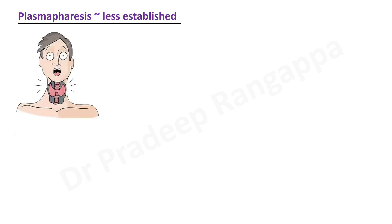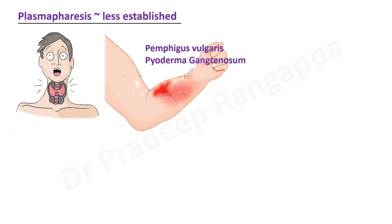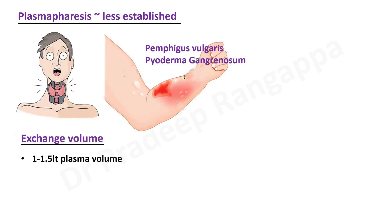There are conditions where plasma apheresis is used but it is less established. Thyroid crisis or thyrotoxicosis is a situation where plasma apheresis is contemplated. Some dermatological conditions like pemphigus vulgaris or pyoderma gangrenosum have been considered, but there are only anecdotal reports. This is not a class 1 or strong recommendation in any of these conditions.